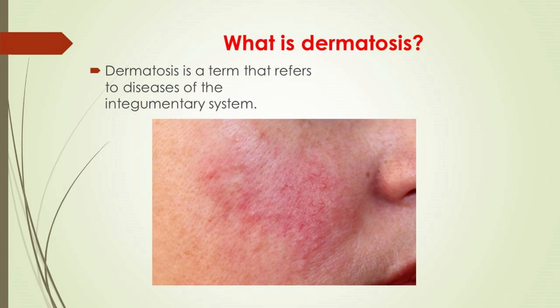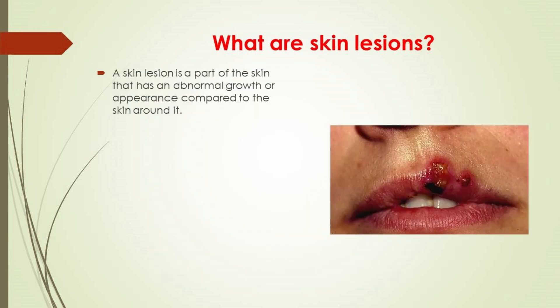Any condition affecting the skin could be categorized as a dermatosis. This doesn't include skin conditions that involve inflammation — that would be dermatitis. Skin has several layers including the epidermis, the dermis, and subcutaneous tissue. A dermatosis may involve changes in any or all of these skin layers.